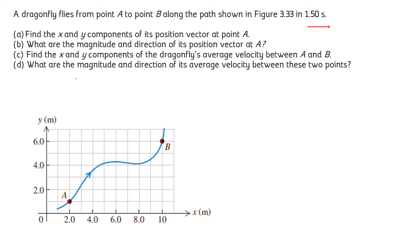First, let's understand what a position vector is. The position vector is the coordinate, or we can say the distance from the reference point, where we consider the reference point as point O, where the coordinates of the reference point are (0, 0).